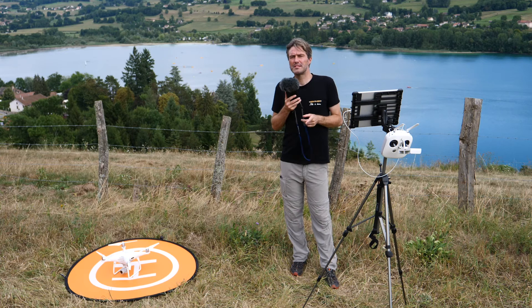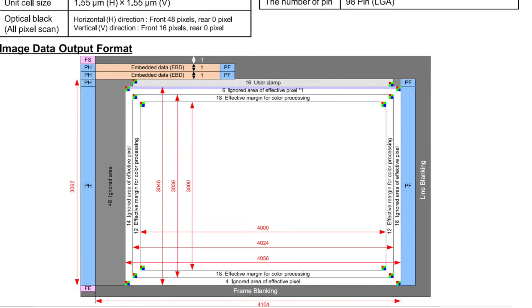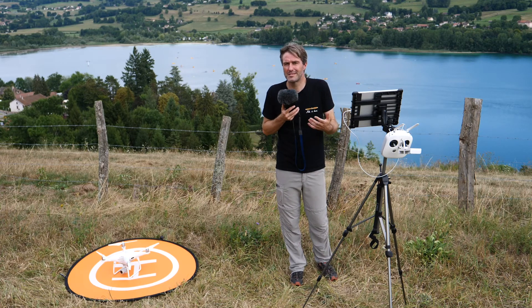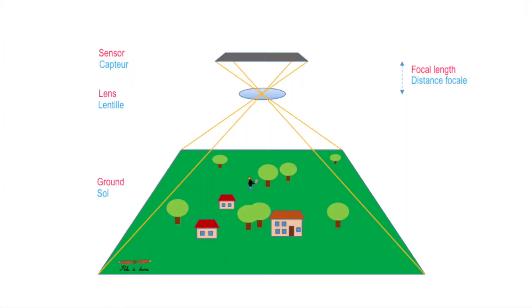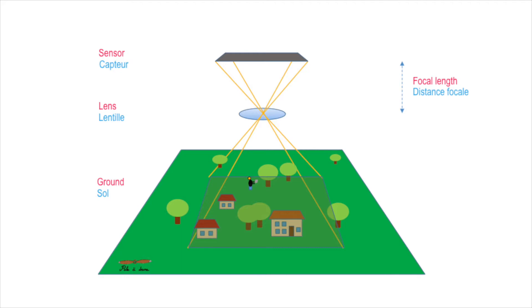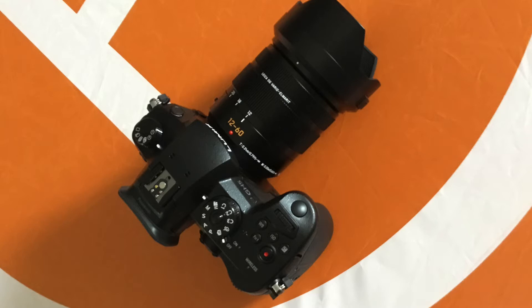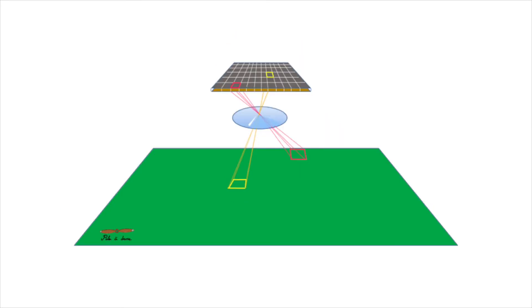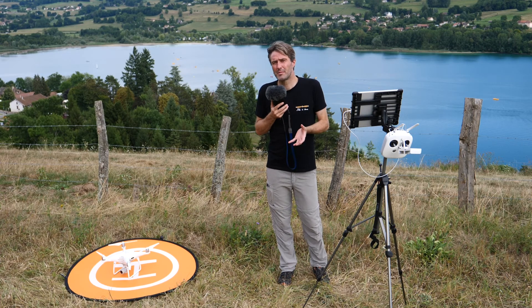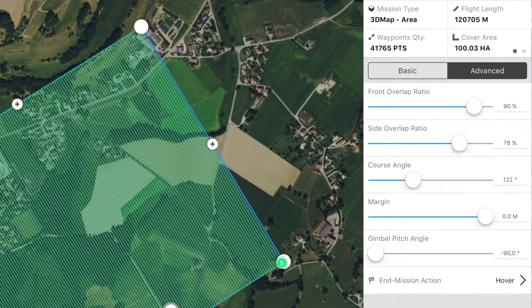How can we increase resolution? There are three options: first, increase sensor definition — this is possible when you haven't yet chosen your device. Once you've already purchased one, you can adjust the focal length by increasing it, which is possible if you have a camera with an adjustable lens. The third lever is to reduce the flight altitude. What improves quality in photogrammetry but does NOT improve resolution is increasing overlap.